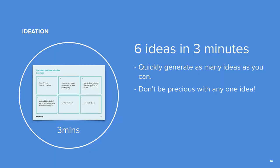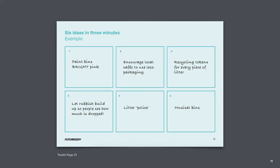In the previous activity, you each wrote a few how might we statements. The last activity that we'll do together is called six ideas in three minutes. This activity is usually part of the design stage, but in this video, we'll use it to end our definition stage. Up to this point, we've been focusing on defining our problem. Now we want you to think big to create multiple possible solutions. You should now have the six ideas in three minutes worksheets in front of you. As a group, decide on a how might we statement to work with. You should choose a statement that everyone in your group gets excited about.